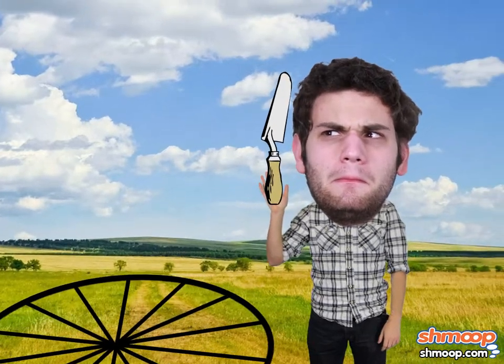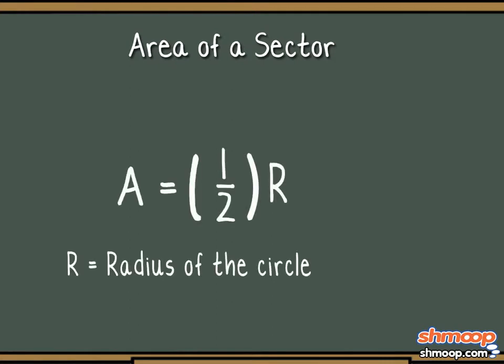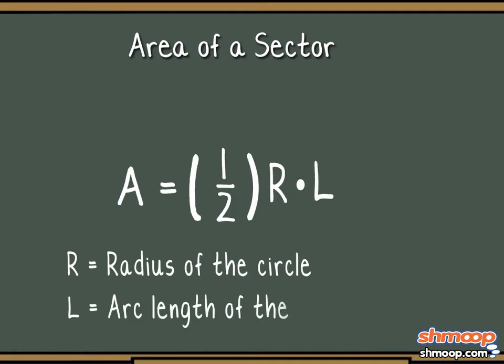Fortunately, this particular gardener remembered his geometry, specifically the formula for the area of a sector or slice of a circle. Area equals one-half the radius of the circle times the arc length of the desired sector.